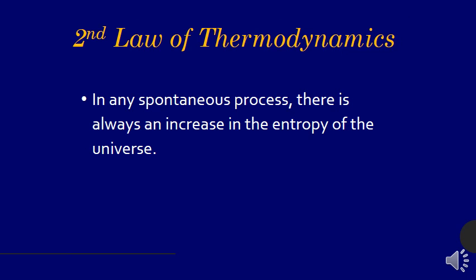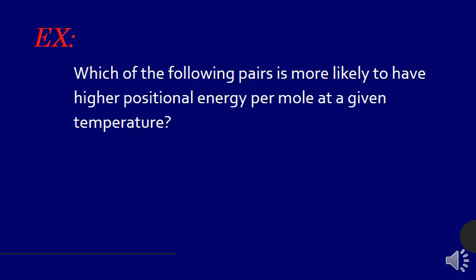Now, in any spontaneous process, there's always an increase in the entropy of the universe. The second law says entropy is constantly increasing. So which of the following pairs is most likely to have positional energy? Solid or gaseous phosphorus? Well, that would be gaseous phosphorus because in a gas, there's much, much, much, many more, many more positions for the atoms to be in than in a solid.